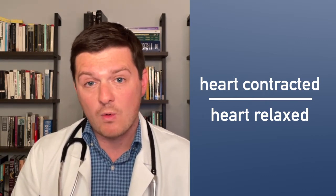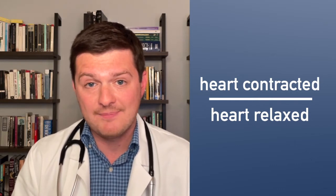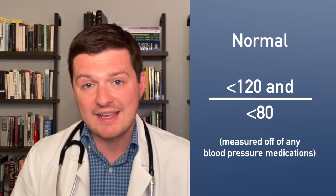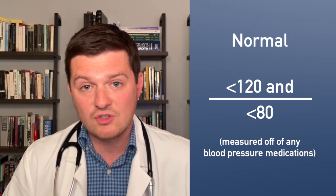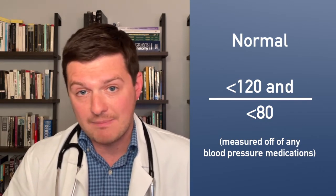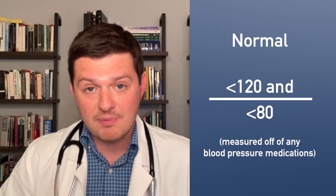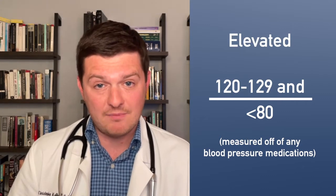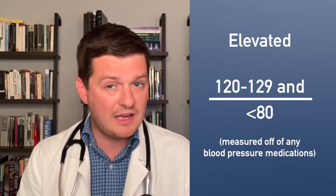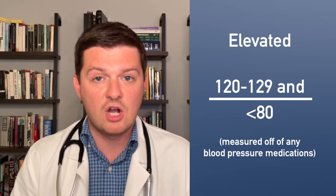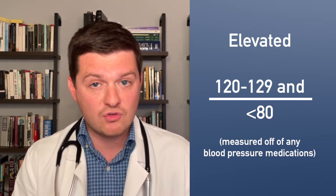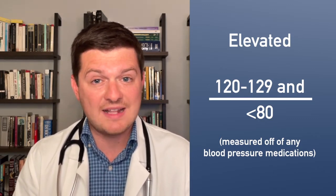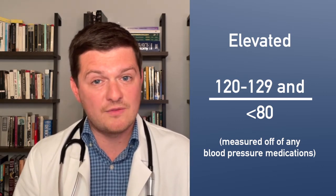Either one or both of those numbers can be high. So what's normal and what's not normal? A normal blood pressure is a systolic top number less than 120 and a diastolic bottom number less than 80. Elevated blood pressure — not quite hypertension but in the pre-hypertension range — occurs when the top number is between 120 and 129 but the bottom number is still less than 80. That's an early warning sign that you are at risk of developing hypertension later on.